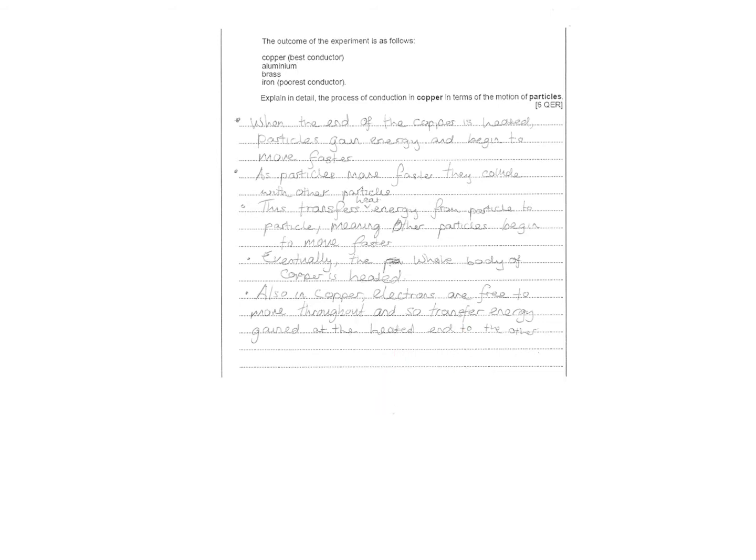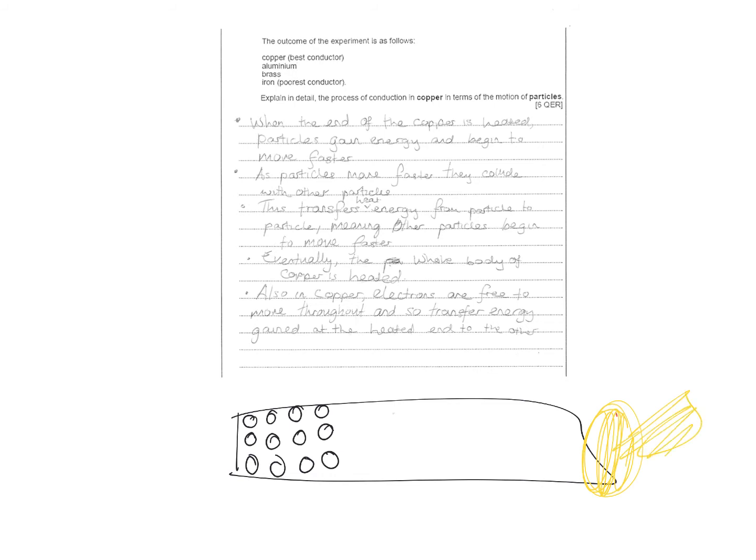Explain the process. When the end of the copper is heated, particles gain energy and begin to move faster. As more particles move faster, they collide with other particles. This then transfers heat energy. You've got your rod here with loads of particles all packed in. Imagine you've got your Vaseline at the end with your paper clip on it. You heat up this one by here because that's your Bunsen burner. What happens is that one gains energy and starts to collide and bump into them, so the heat transmits all the way along the metal rod, and eventually it will heat up the Vaseline and it will fall off. The one that's the best conductor, that will happen quickest. Copper would happen quickest. Iron isn't as good a conductor, so it won't conduct the heat as quickly.